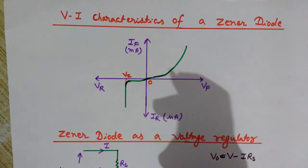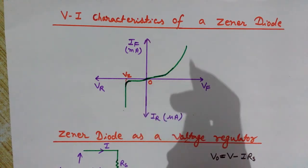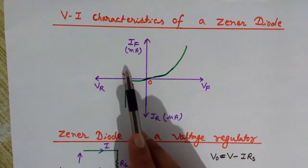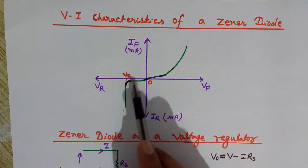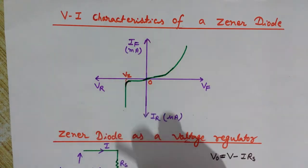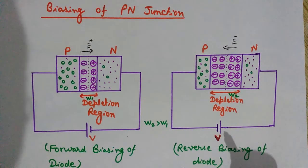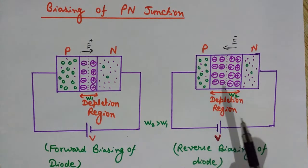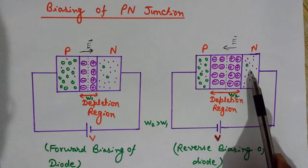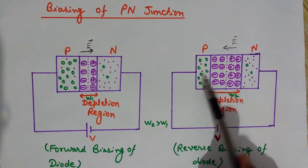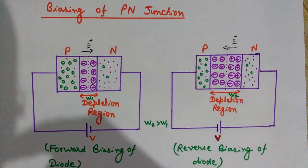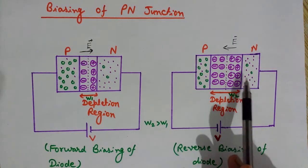In a circuit, if the current increases it will not let the voltage increase, and it will remain constant at Vz — the breakdown voltage of the zener. Even on increasing the voltage, because we have a small amount of minority charge carriers in P and N sides, the reverse saturation current we get is very small.